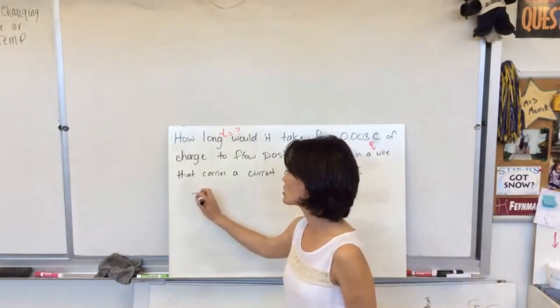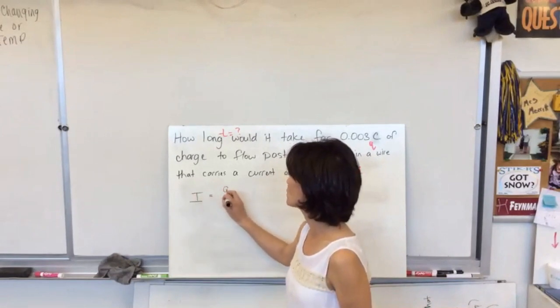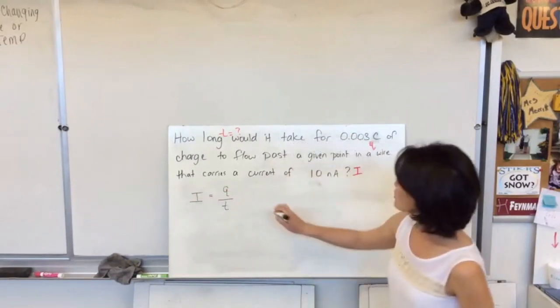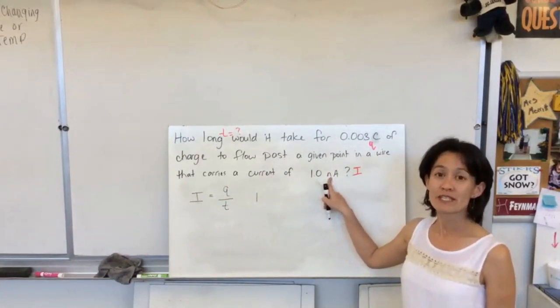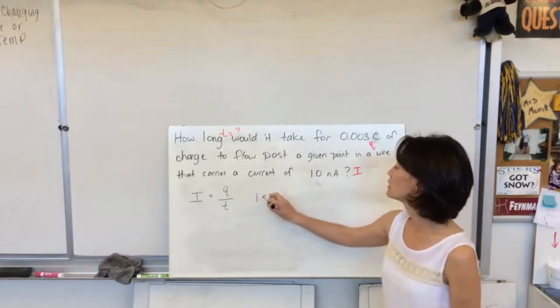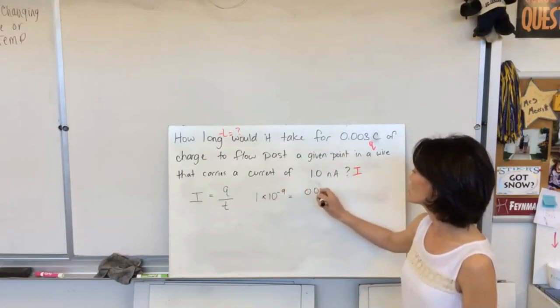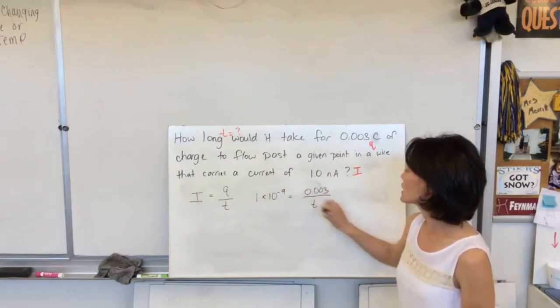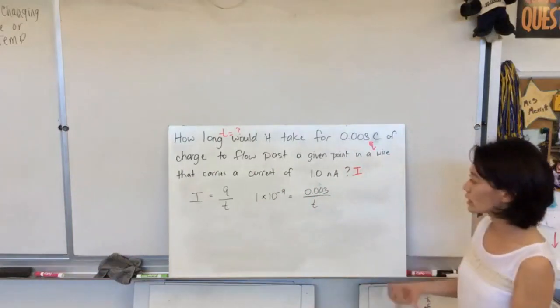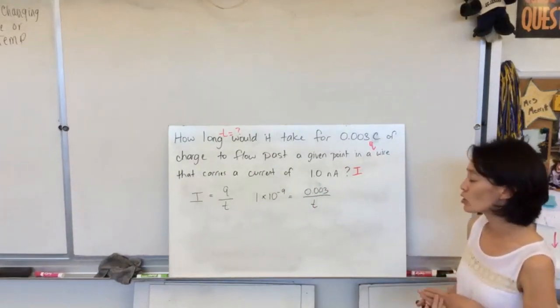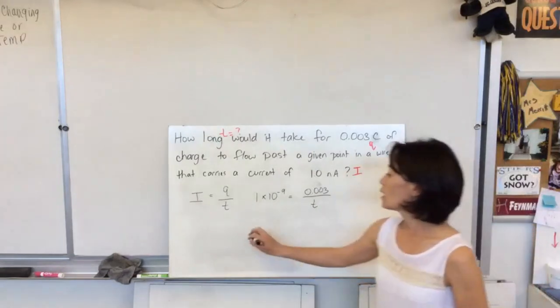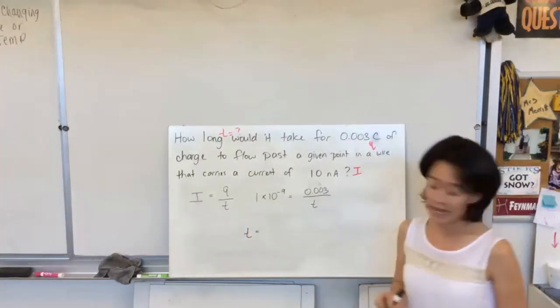So this is pretty straightforward. I is just equal to q over t. So I've got 1 nanoamp. Nano is times 10 to the negative 9. It's equal to my charge, so 0.003 over my time. And go ahead and try to calculate that out. If you want to pause the video, go ahead and pause the video.